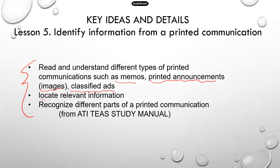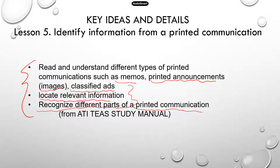Next, you need to be able to locate relevant information. Basically, you can understand the information and also identify the details that can help you answer a specific question. Last, recognize different parts of a printed communication. If you can recognize the different parts, then that means you understand the information and you can locate a specific piece of information.